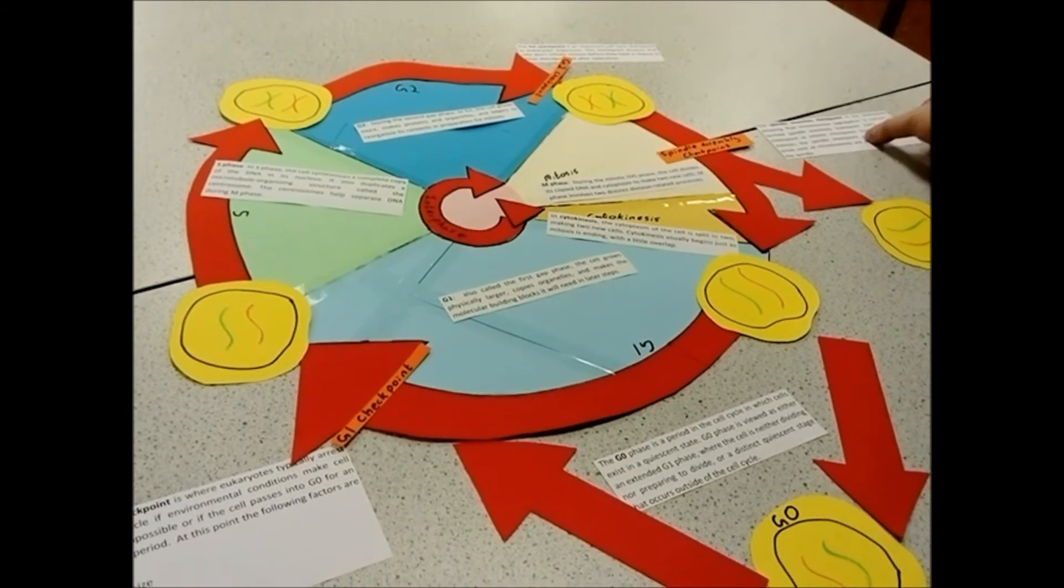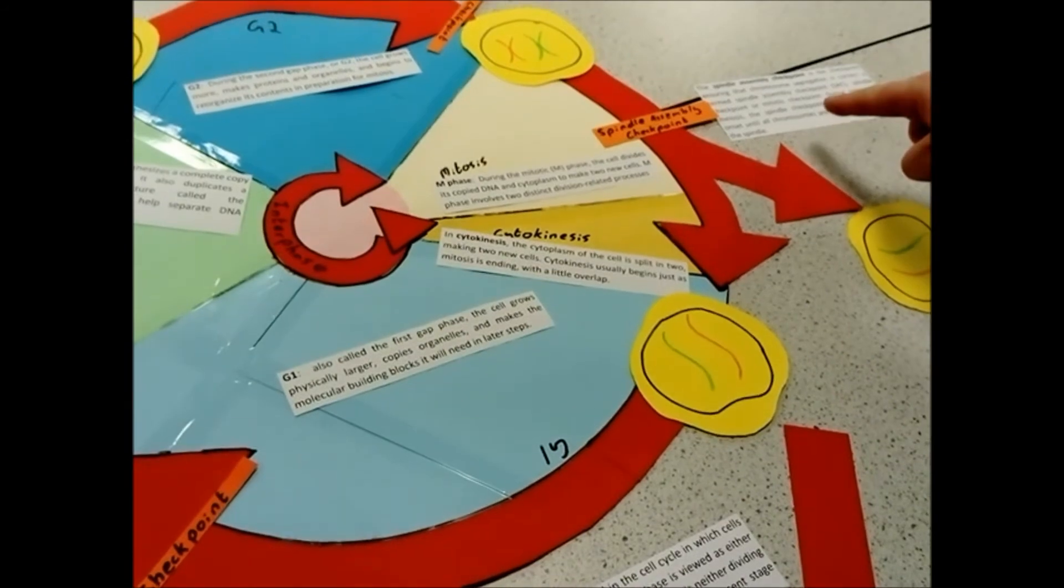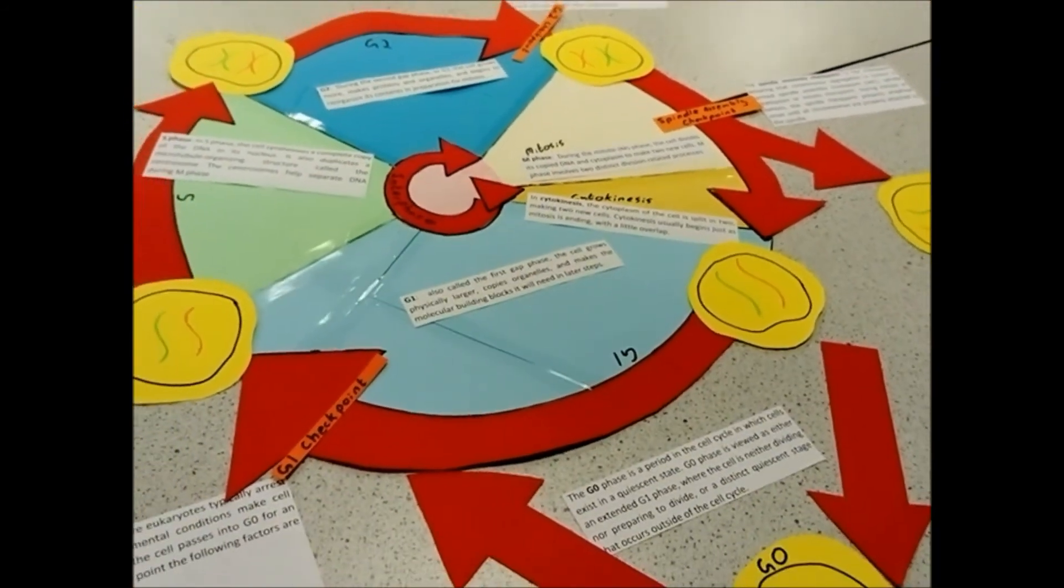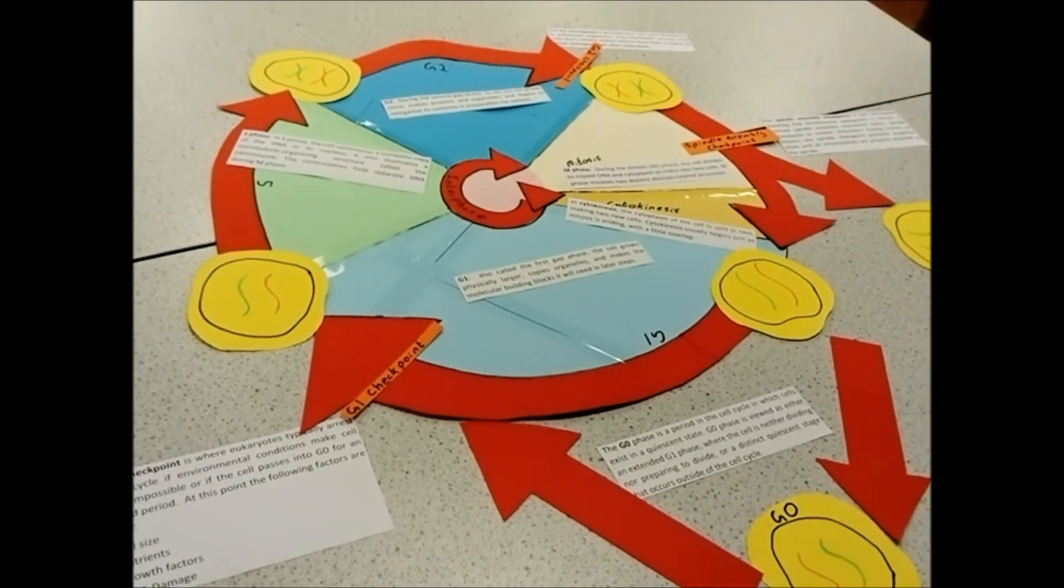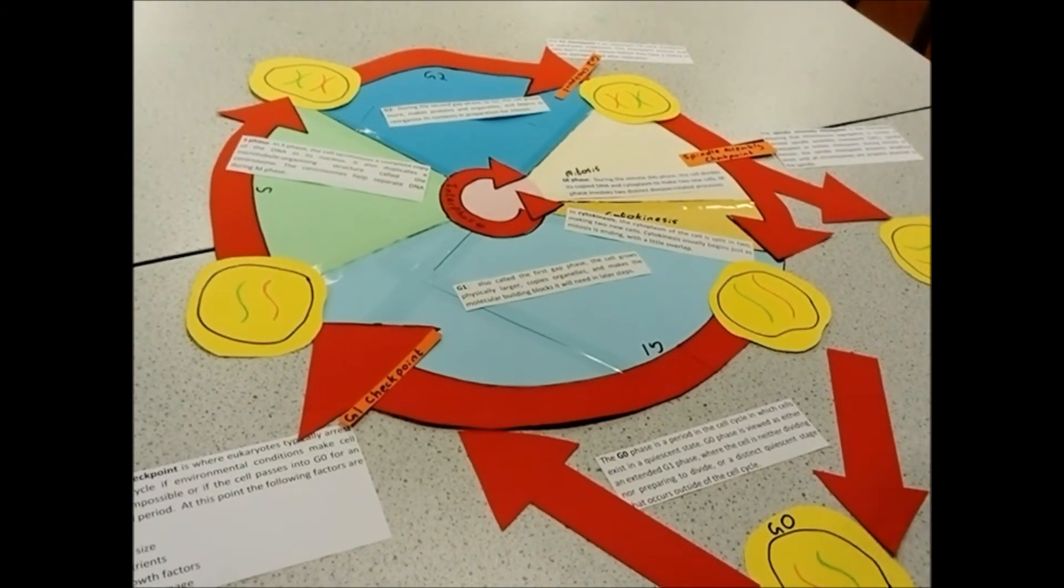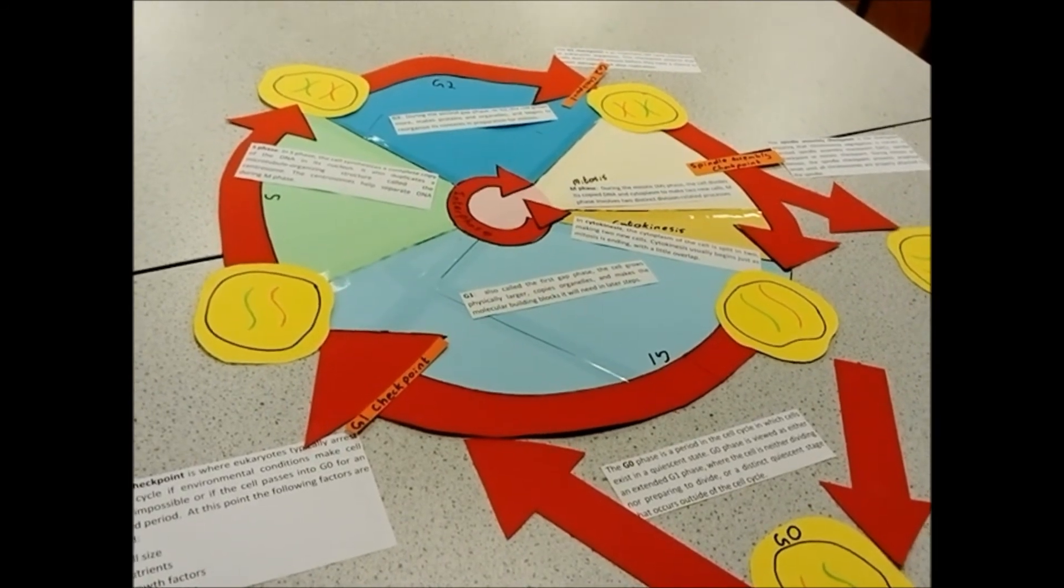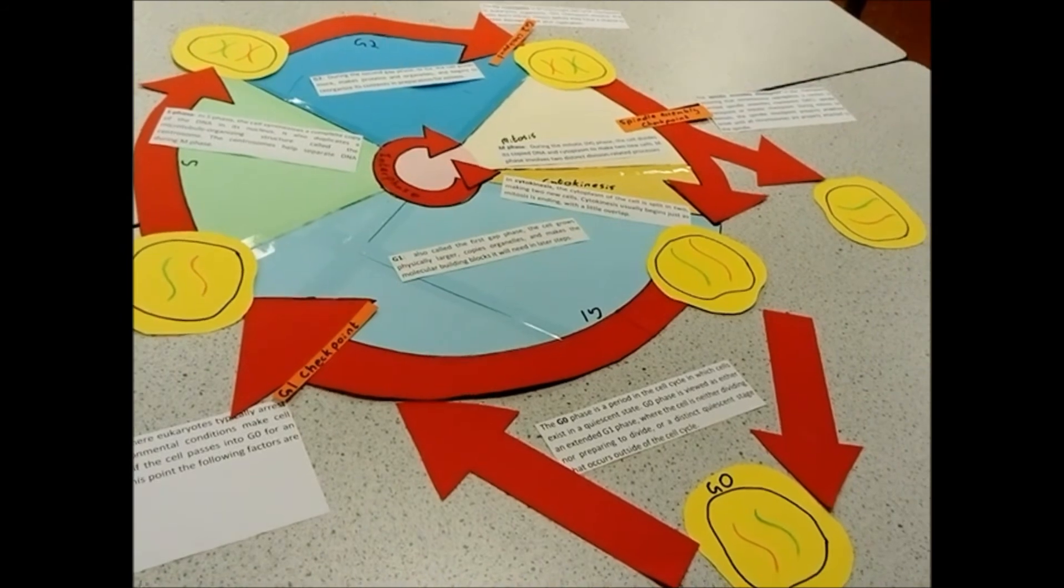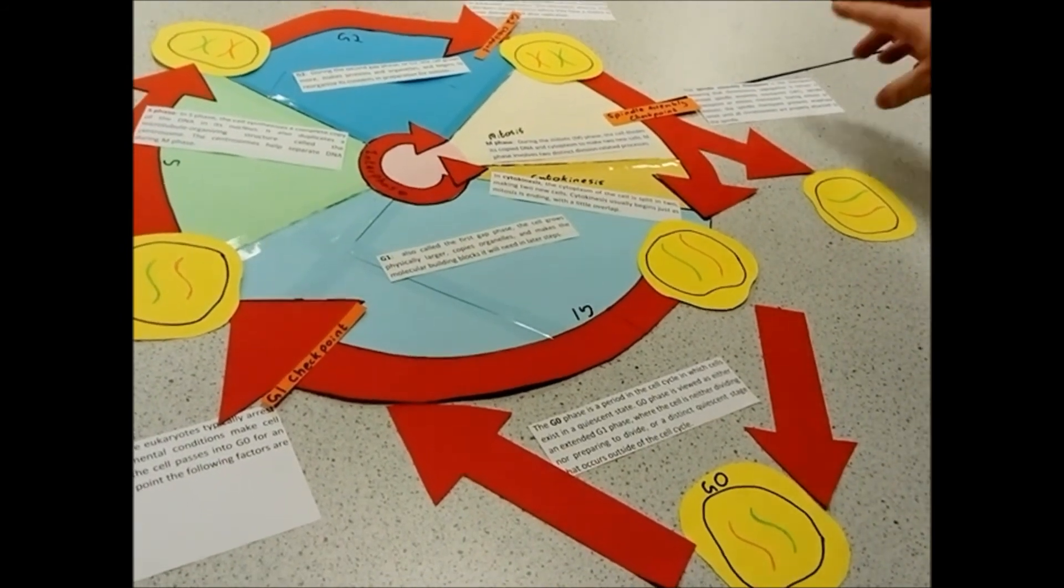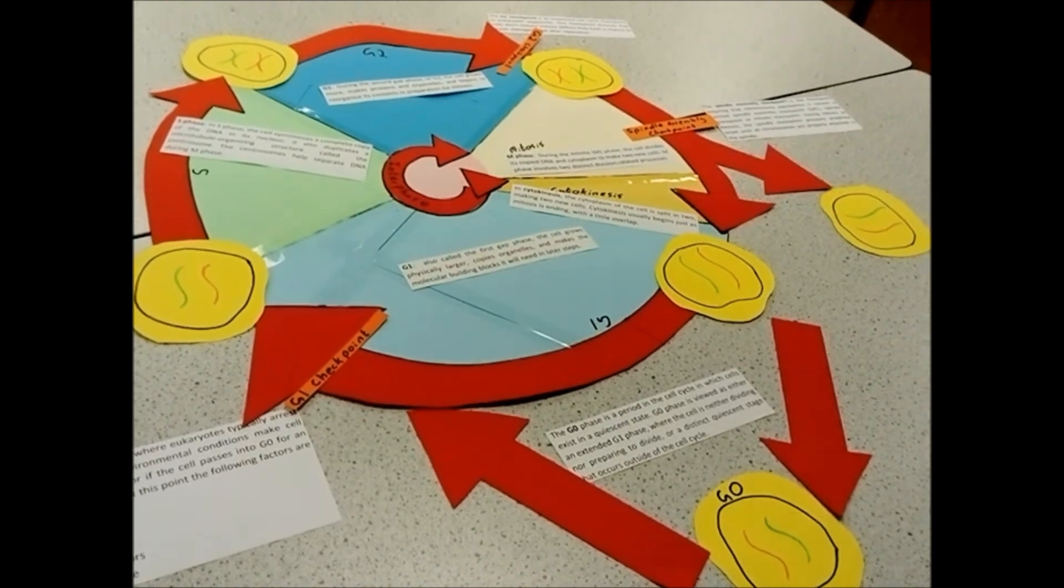Last part, back end of mitosis. You've got the spindle assembly checkpoint. Because if your spindle fibers haven't attached to these pairs of chromosomes correctly, you might get incorrect number of chromosomes going to both sides, which can cause an entire host of problems, and inherited diseases. At that point, all we do is check that the spindle fibers are attached correctly.